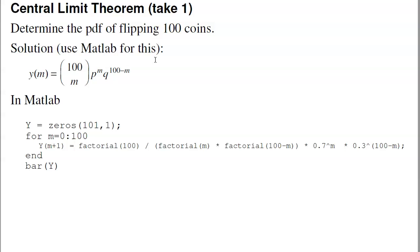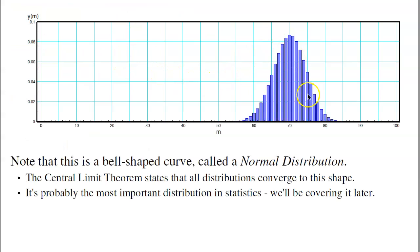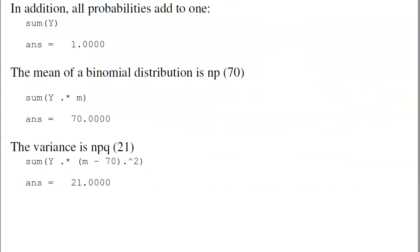Central limit theorem. This is something we'll be talking about later. Central limit theorem is probably one of the most important concepts in statistics, and we'll be covering that later. In addition, all probabilities have to add to one. If I take that PDF and add them all up, I've got to get to one. If I flip a hundred coins, something happens. The mean will be the average of the data times m. The variance is the distance of the average of the mean times probability.